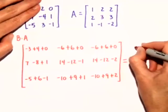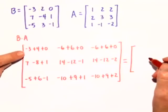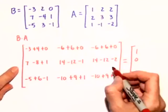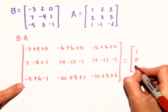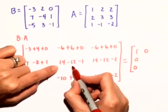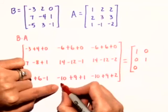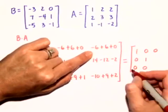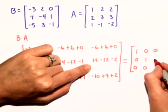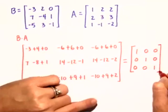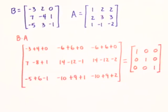When we simplify this, we get the 3 by 3 matrix. Negative 3 plus 4 plus 0 is 1. 7 minus 8 plus 1 is 0. Negative 5 plus 6 plus 0 is 0. 14 minus 12 minus 1 is 1. Negative 10 plus 9 plus 1 is 0. Negative 6 plus 6 plus 0 is 0. 14 minus 12 minus 2 is 0. And negative 10 plus 9 plus 2 is 1. So not only have we shown that A times B is the identity matrix, but also B times A is the identity matrix, so B is the inverse of A.